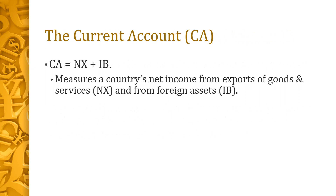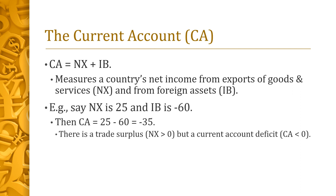Combining the first two building blocks, the current account CA is simply the sum of NX and IB. CA can be thought of as a country's net income from exports of goods and services and from foreign assets. For instance, if NX is 25 and IB is minus 60, then the current account CA is 25 minus 60, which is minus 35. In this case, there is a trade surplus because NX is positive, but there is a current account deficit since CA is negative.